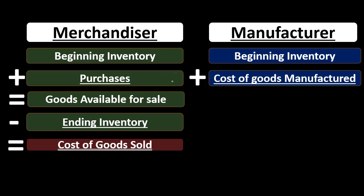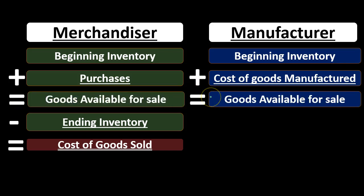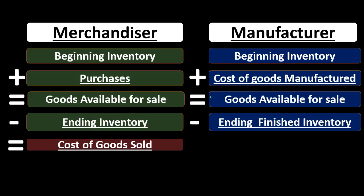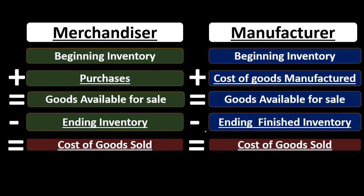That's where the big difference is. Purchases represents the activity for a merchandiser, while cost of goods manufactured represents what the manufacturer did — not only purchasing materials but converting them into finished inventory. Adding cost of goods manufactured to beginning inventory gives us the cost of goods available for sale, and then we subtract ending finished goods inventory to arrive at cost of goods sold.